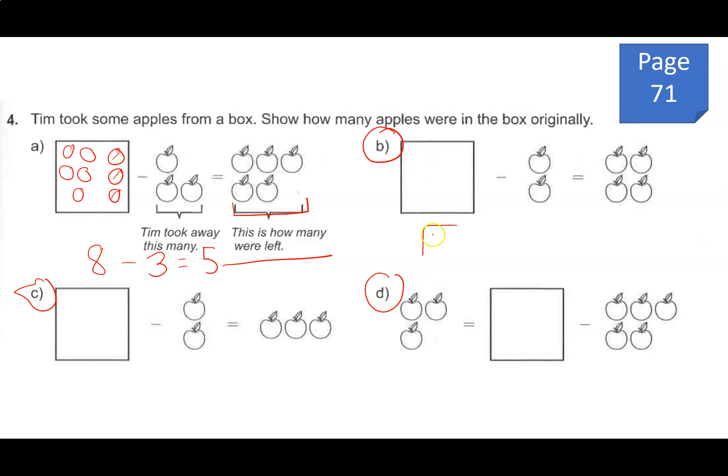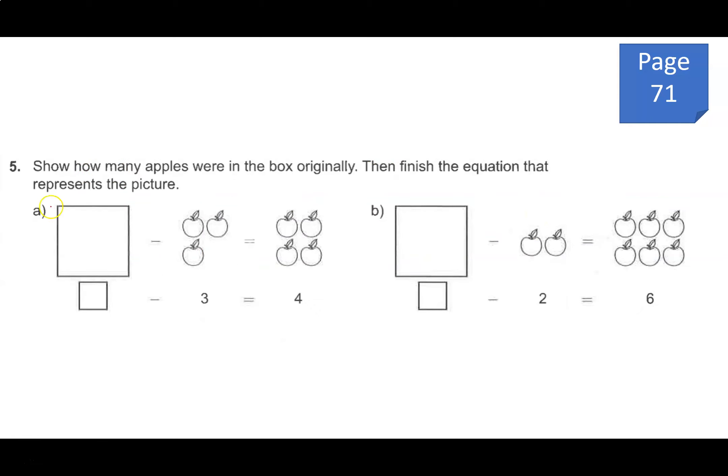For B, remember your mystery box is first minus 2 apples equals 4. So what number minus 2 will equal 4? I would like you to try 5A and 5B by yourself.